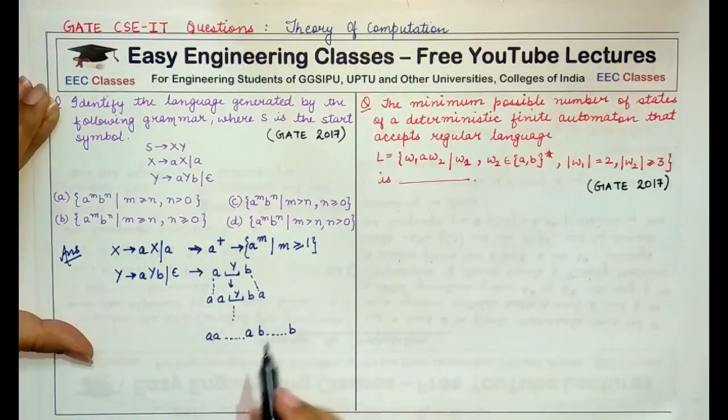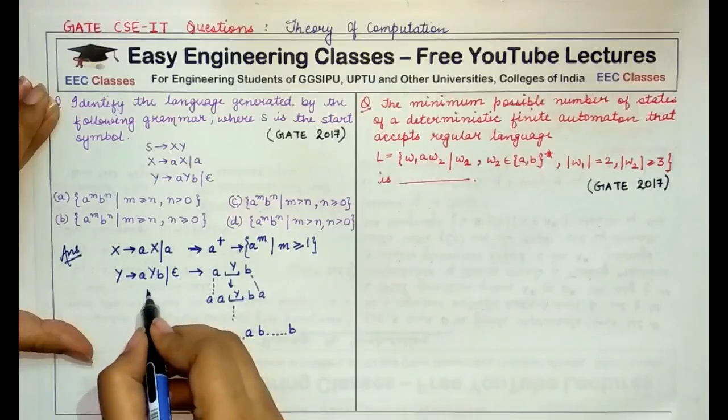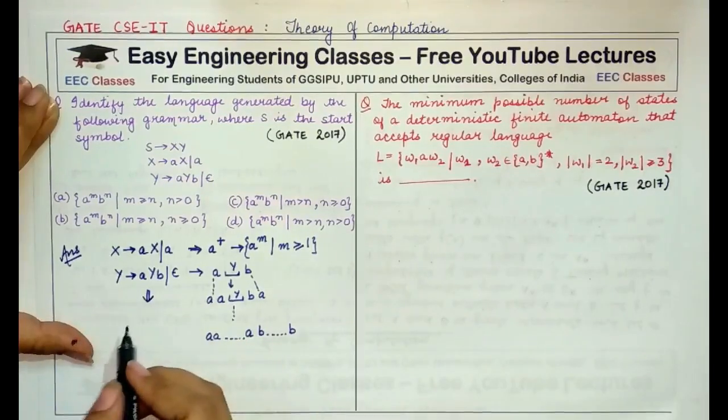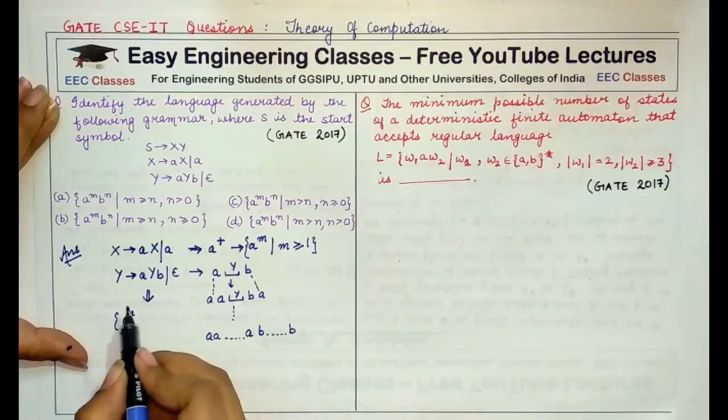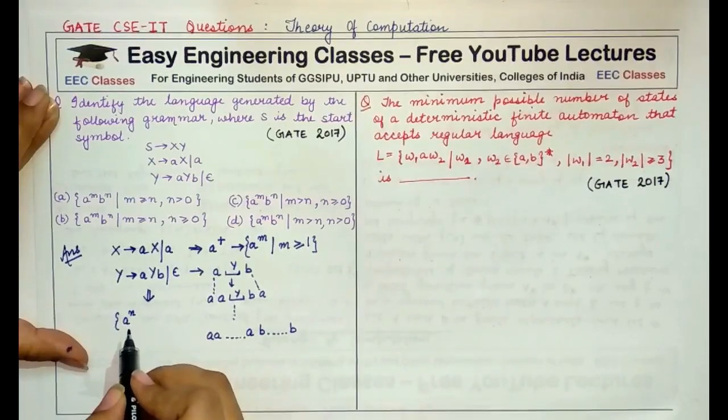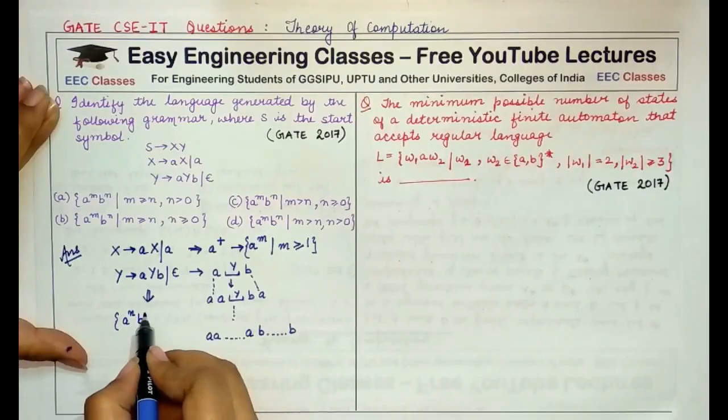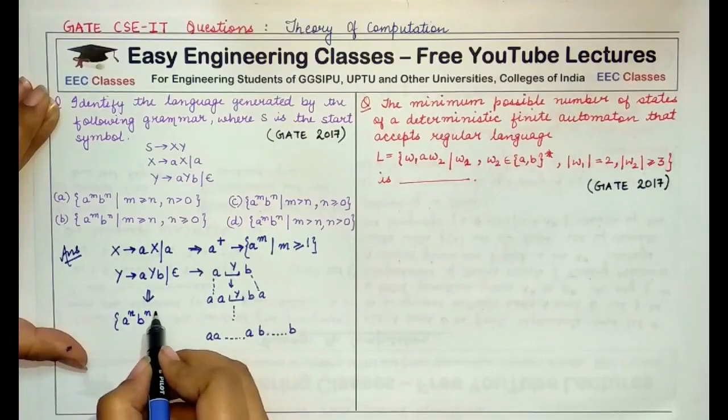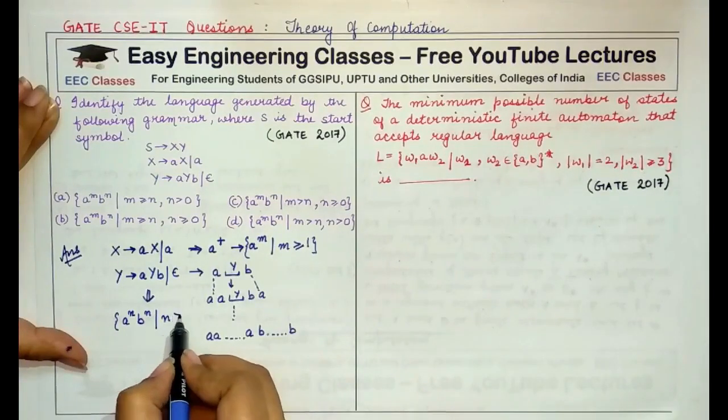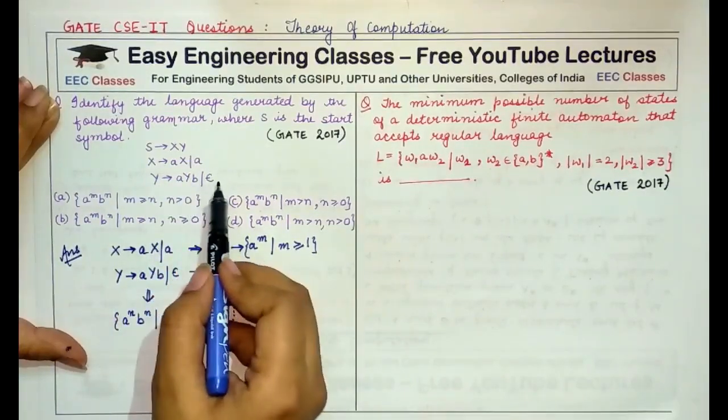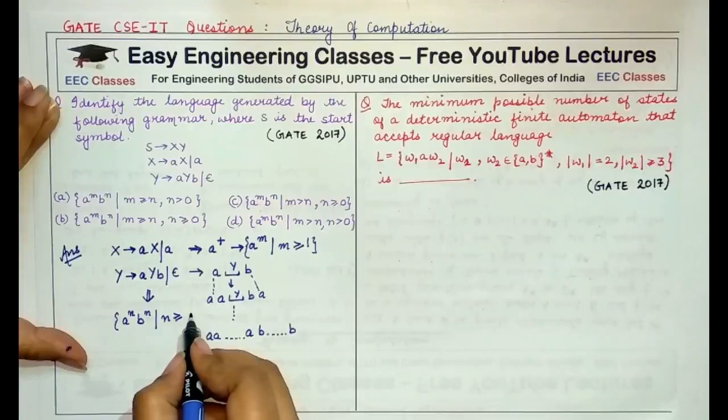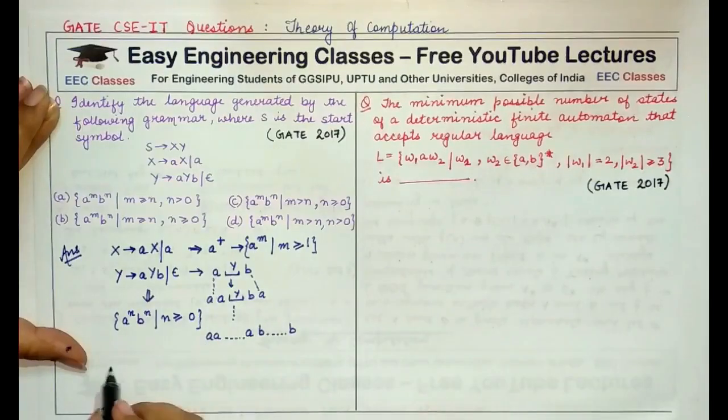So, in this case, the string or the kind of string that would be represented by Y would be A raised to power N. That means some number of A's followed by the equal number of B's such that N is equal to 0 if we replace Y with the empty string, then N will be equal to 0 or it is greater than 0.